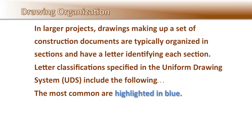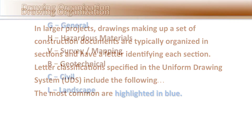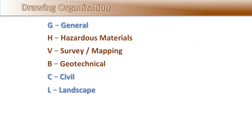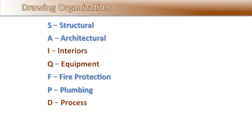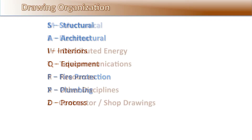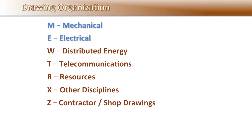The most common classifications used in construction are highlighted: G for General, C for Civil, L for Landscape, S for Structural, A for Architectural, F for Fire Protection, P for Plumbing, M for Mechanical, and E for Electrical.